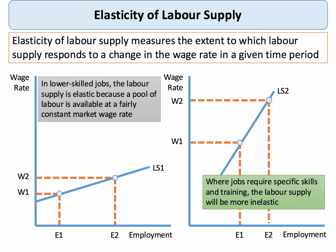In contrast, here's a more inelastic labour supply curve where the job might require either a specific skill, a particular bit of human capital, maybe very specific training, perhaps some higher level academic qualifications, or prior experience is needed, and as a result the labour supply curve would be more inelastic. If the wage rate goes up, it'll need to go quite a long way to get the necessary workers to be able to supply themselves.